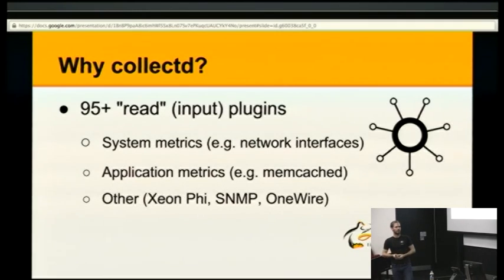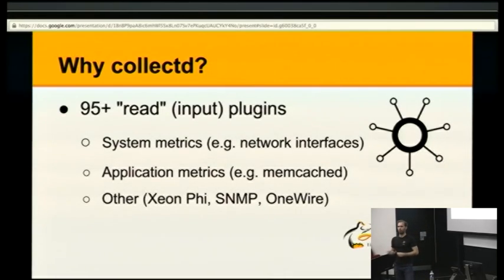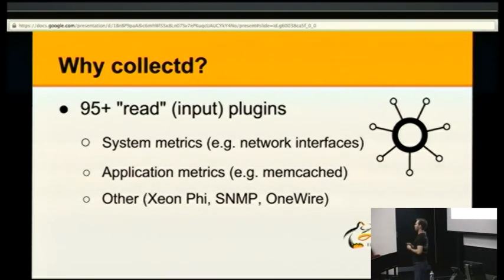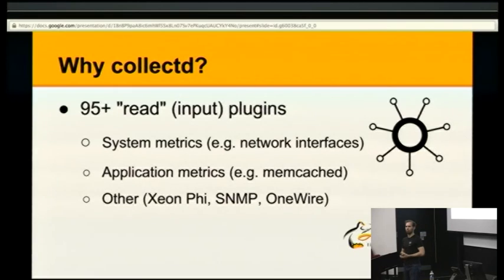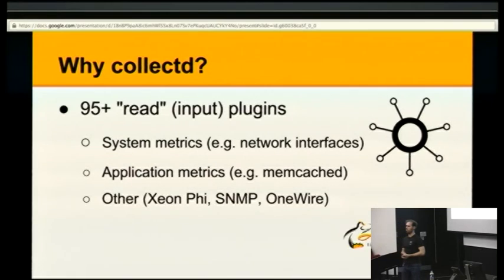The biggest category is read plugins. Read plugins get metrics from somewhere — the somewhere is often an operating system, and the metrics will be something like a queue length, the number of packets, or the amount of memory used by an application. Another set of metrics comes from applications. Like, the Varnish cache can tell you how many hits and misses it had, and you can calculate a hit-to-miss ratio.